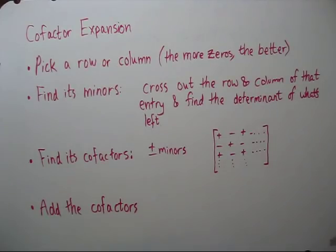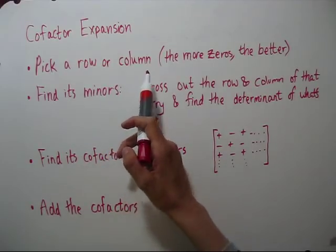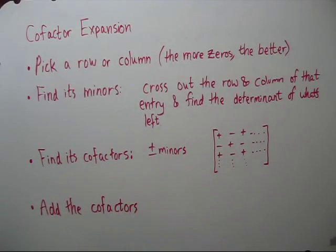Now that nice little pattern that worked for the 3 by 3 doesn't work for the 4 by 4 or 5 by 5s. If you want an adventure, you could try to find a pattern for the 4 by 4. There are several ways to define determinants for any size of matrix. And the one I'm going to teach you is called cofactor expansion. First thing to do is pick a row or column of your matrix. The more zeros there are, the easier.